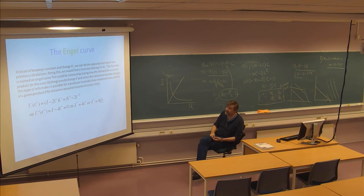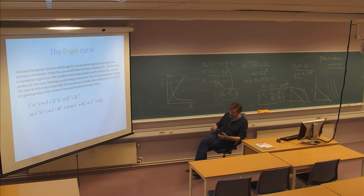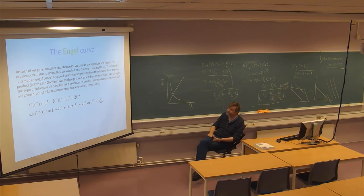This function named an Engel curve could be interesting, stating how the demand for a certain product - in this case clothing - would change if and when the consumer's income changes. This is relevant decision support for any manufacturer or shop. If you get some news that government agents are interested in increasing people's income, you can see some effect on how much you sell. This type of info makes it possible for a producer to predict how much more they will sell of a given product if consumer income increases.